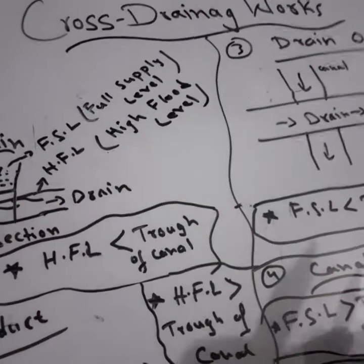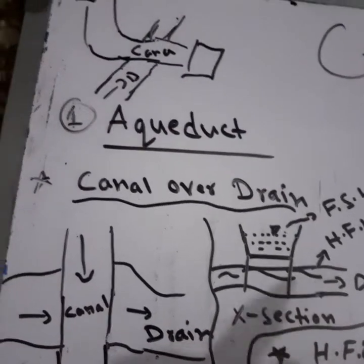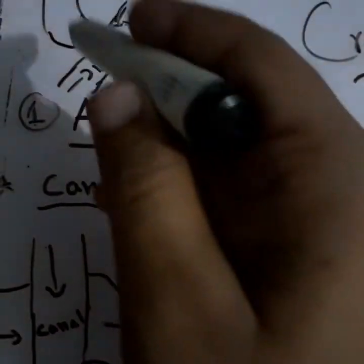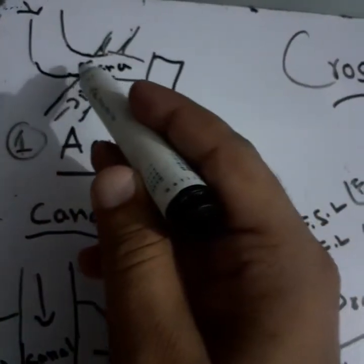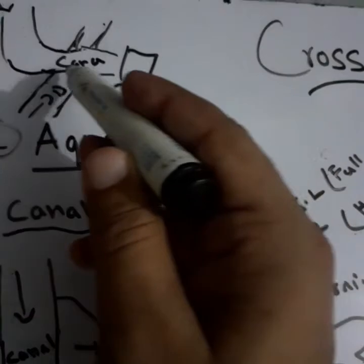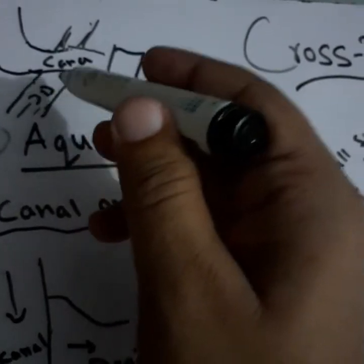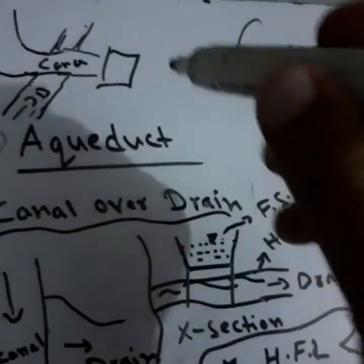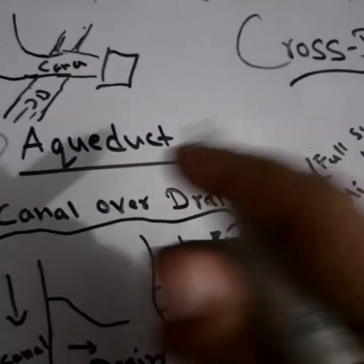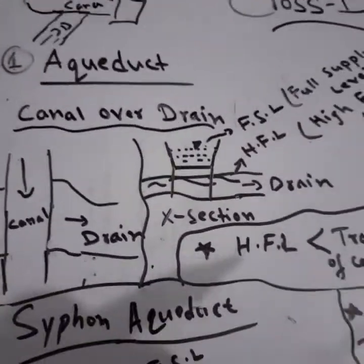Welcome to Seoul Ideas. Today we will discuss cross drainage works in irrigation engineering. Natural rivers come in, and we have constructed canals to carry water to the fields. In between, there are drainage works carrying polluted water, and we don't want to mix it with the canal water, so we have to provide cross drainage works. Now we'll discuss briefly every type of cross drainage work.